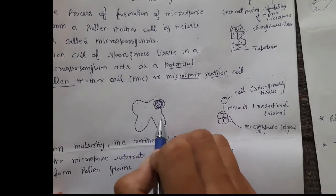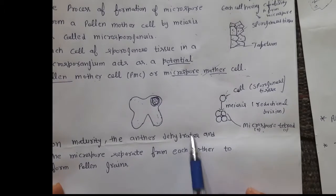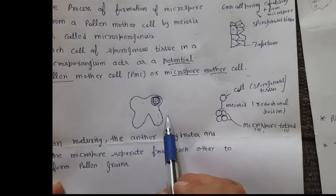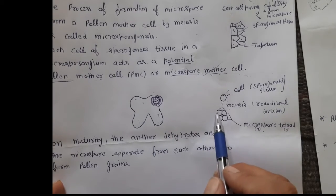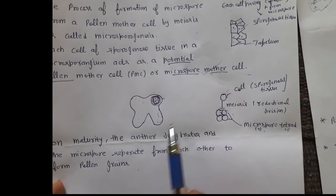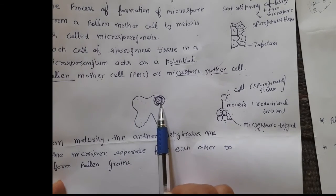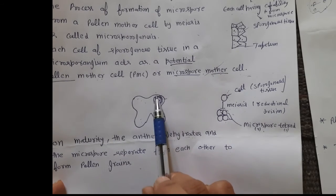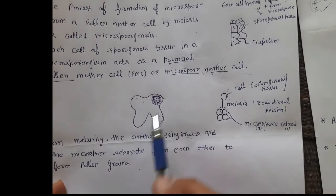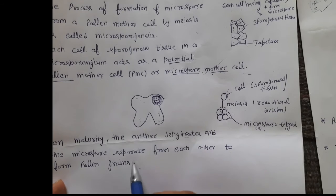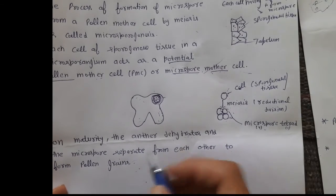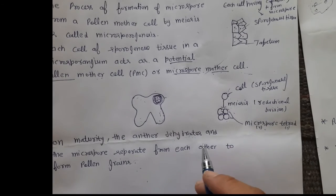As the anther matures, it undergoes dehydration — meaning loss of water — and the microspores separate from each other to form individual pollen grains. When the anther is young it is called a microsporangium, and later it becomes the pollen sac. In the next class we will discuss what a pollen grain is — it is spherical in nature and has two layers, including the exine. Take care, bye bye, see you in the next class.